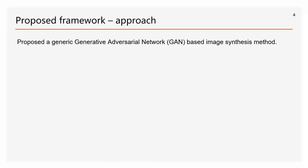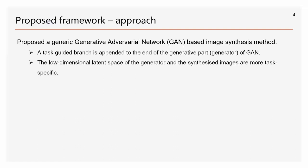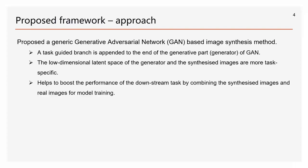To overcome the data scarcity problem, in this paper we propose a generative adversarial network-based image synthesis method. Different from existing GAN-based methods, to guide the model to learn more task-specific features, we integrate a task-guided branch to the end of the generator in the GAN. By adding a task-guided loss, the learned low-dimensional latent space and the synthesized images are more task-specific.